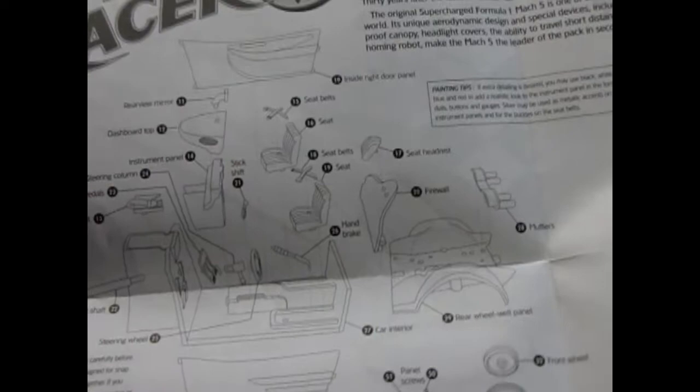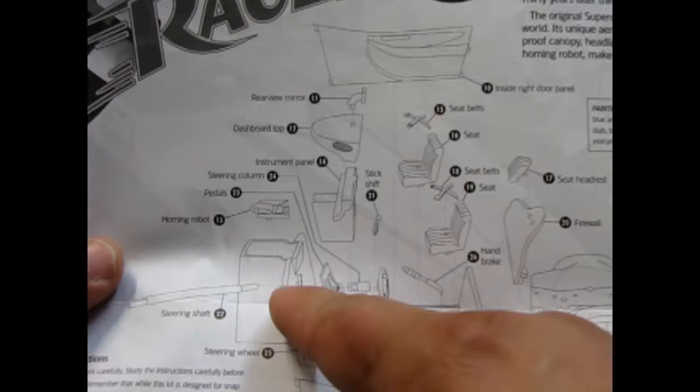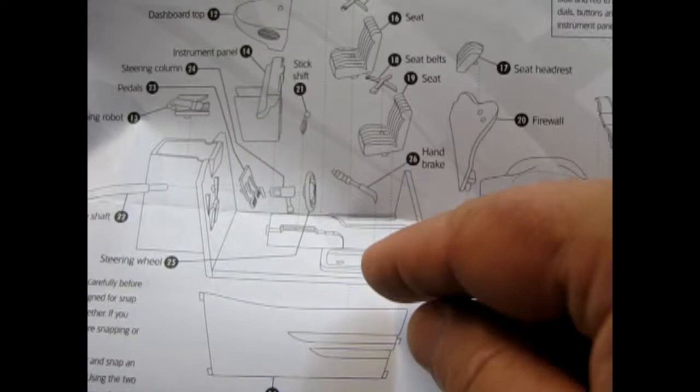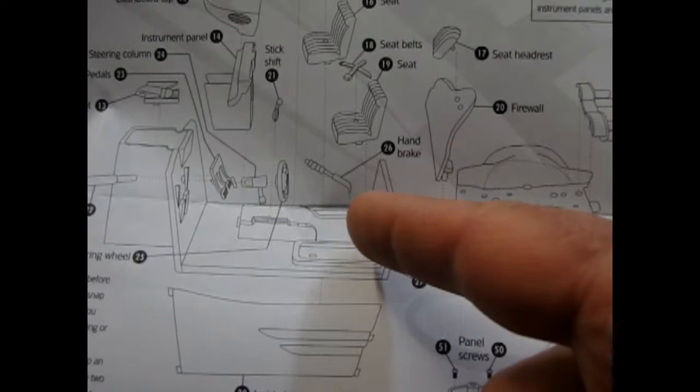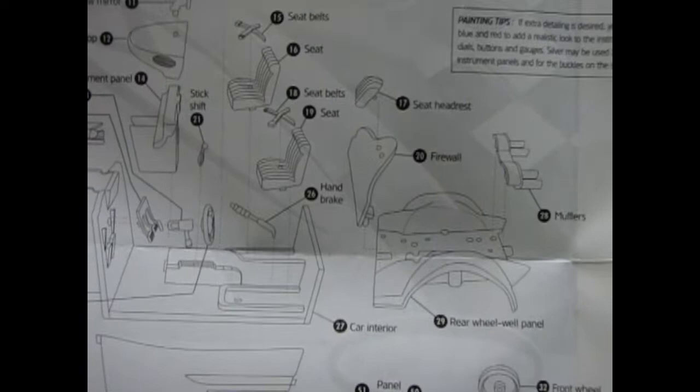Here it's got that homing robot which was the flying bird that popped out of the car, and a steering shaft with steering wheel, handbrakes, and separate seat belts which was quite a new feature in that time frame, but then again it was a race car.